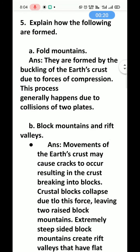Question number 5: Explain how the following are formed. A. Fold Mountains — they are formed by the buckling of the earth's crust due to forces of compression. When pressure is applied on the earth's crust, some plates collide, and from that, Fold Mountains are formed. This plate process generally happens due to the collision of two plates.